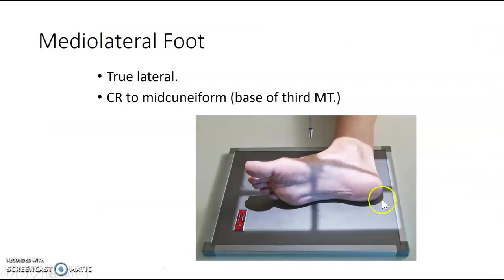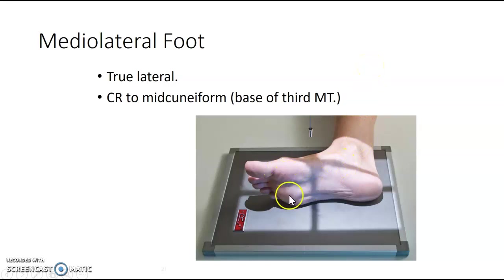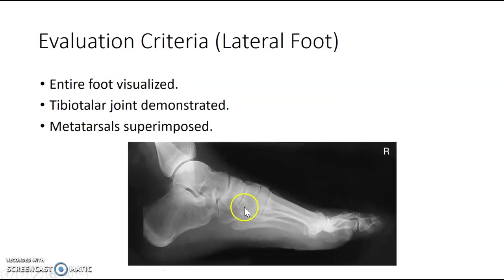For the mediolateral foot, place the foot in true lateral — we'll practice this in lab. You may need to adjust the knee, raising it up or lowering it, to get the foot to fall into lateral position. Feel the base of the foot and make sure it's superimposed over itself. Same centering. Ideally you want all the metatarsals superimposed for your lateral foot.